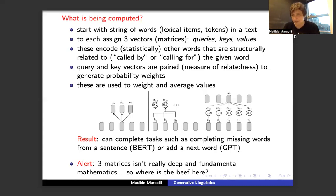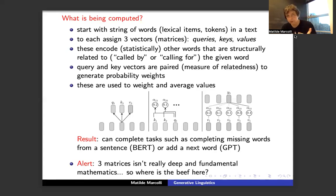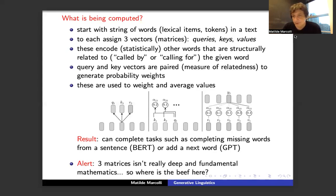The queries and keys vectors are paired as a measure of relatedness — when you take their inner product you're essentially measuring how much they overlap. This measure of relatedness is used to generate probability weights which in turn are used to average the values. The result of this calculational operation, repeated on a large parallel computing system, is that you train your system to complete certain tasks — in particular, completing missing words in sentences or predicting the next word, as in GPT.